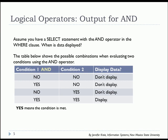We can lay out in a table format whether or not data will be displayed based on the operator and whether one of the two conditions has been met. This is also referred to as truth tables. If condition one is not met and condition two is not met, the result is not to display — the data is filtered. If condition one is met and condition two is not met, you still will not display the data. If condition one is not met and condition two is met, still don't display. You only get the display when both conditions are met. That's the use of the AND operator.